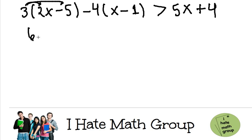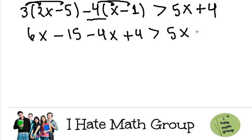3 times 2x is 6x, and 3 times negative 5 is minus 15. Now be very careful because you have a negative 4. This negative 4 is going to affect every single term. Negative 4 times x is negative 4x, and negative 4 times negative 1 is plus 4. This is greater than 5x plus 4.